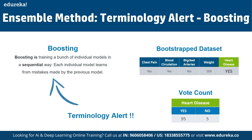Boosting involves training individual models sequentially, where each model learns from the mistakes of the previous one, thereby improving accuracy step by step. For example, selecting blood flow and blocked arteries as variables, we determine which best separates the samples. If blocked arteries is the most significant predictor, it is assigned as the root node. We then repeat this process for each branch node, selecting variables that best separate the samples.